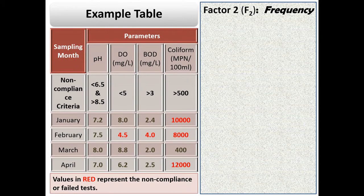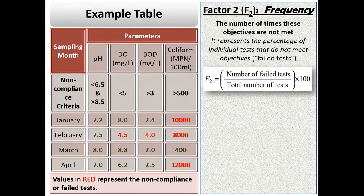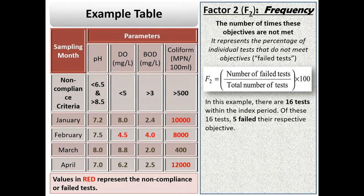The next factor, frequency, represents the number of times these objectives, i.e. standards, are not met. In the table, check out the values marked in red. These values do not meet the prescribed guidelines. As you can see, there are a total of 16 measured values of 4 parameters for 4 months.